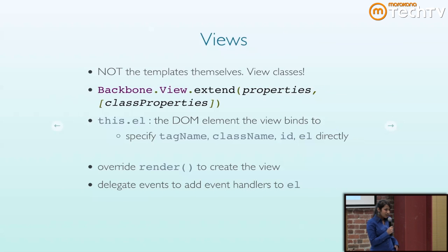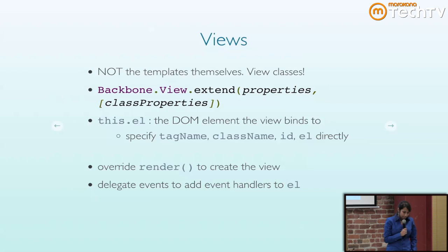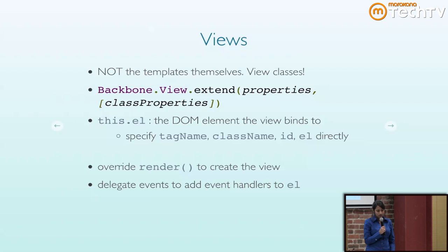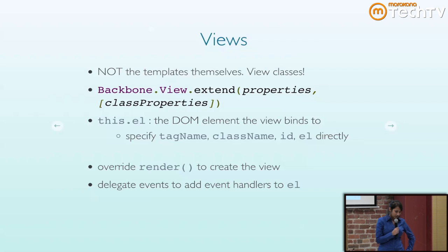The views are not technically MVC views, since they're not the templates themselves — they're more like view classes. Each view is bound to some element in the DOM. You can specify the tag name, class name, or the element directly, and you override render to create the view. That function is called whenever a view is being created, and you create a hash that delegates events to add event handlers to your element.